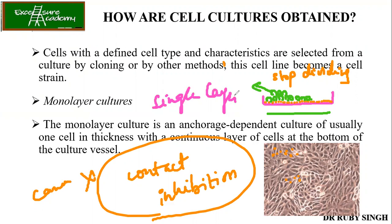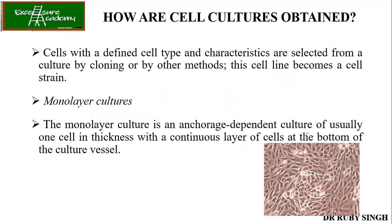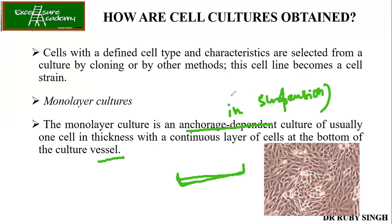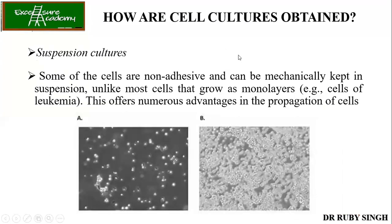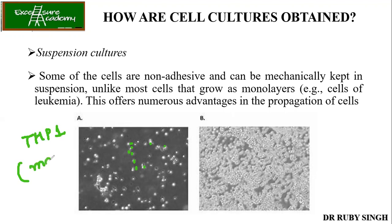Monolayer culture is anchorage-dependent culture — usually one cell thick, with a continuous layer at the bottom of the culture vessel. Anchorage-dependent means it needs a surface to attach. If it is anchorage-independent, the cells don't need a surface and are present as a suspension, like bacterial growth. Some cells are non-adhesive and don't require any surface to adhere. This is the suspension culture, where cells float in the liquid media. One example is THP1, which is used for macrophages.